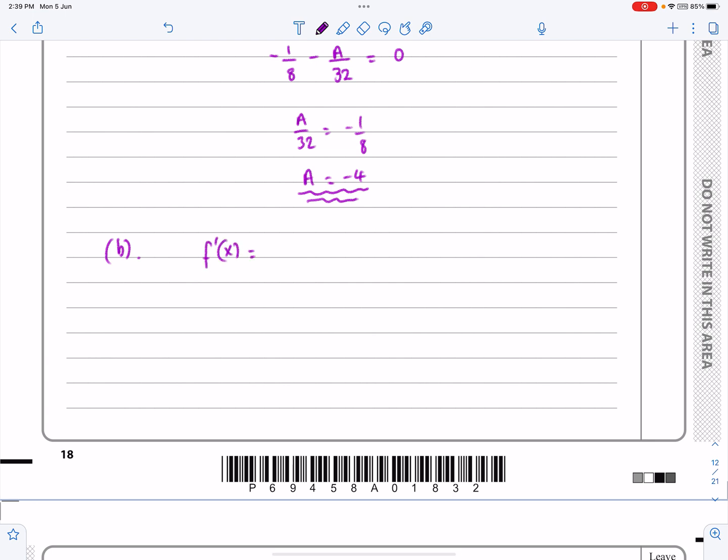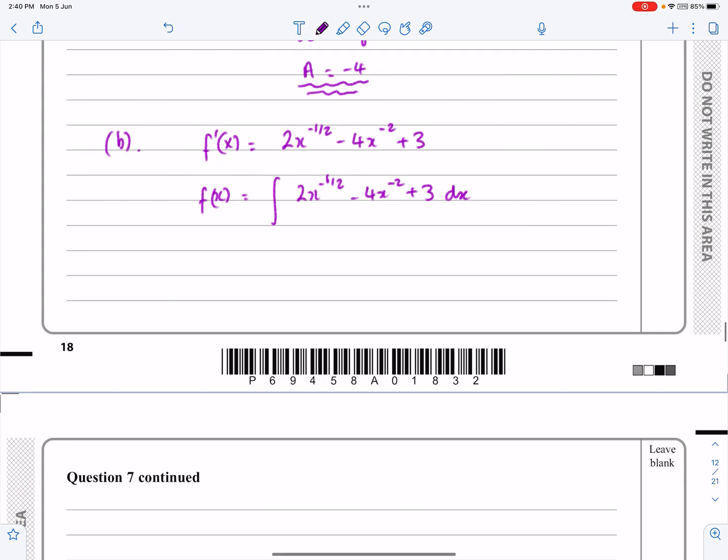So we know what f'(x) is because we've already had that, remembering that we know a now. So it's 2x to the minus 1/2 minus 4x to the minus 2 plus 3. I've subbed in the value of a, and I know that f(x) is just the integral of that. So integral of all of that. This is really just explaining my working out to the examiner.